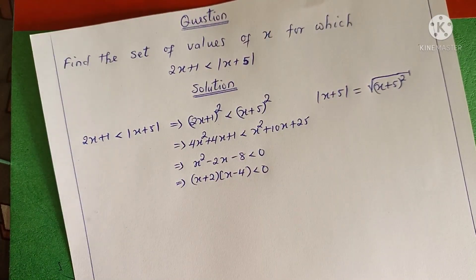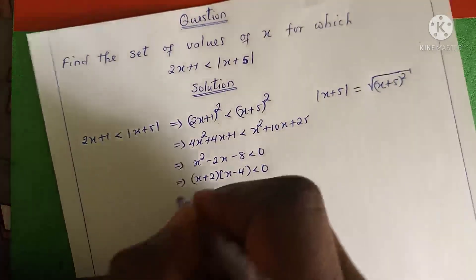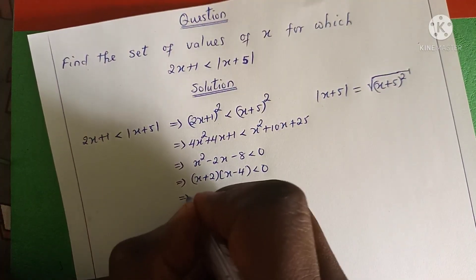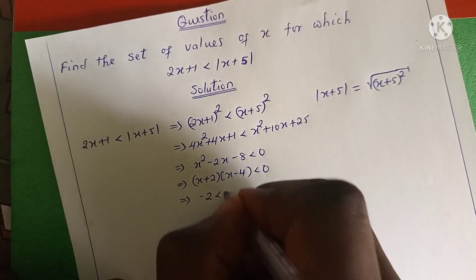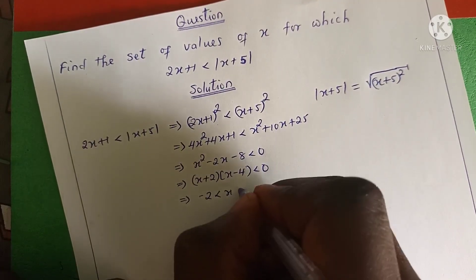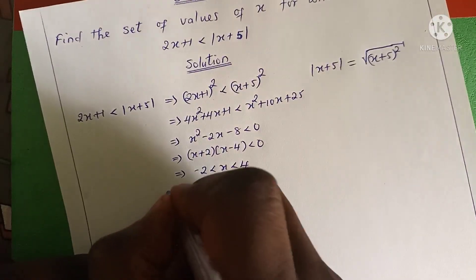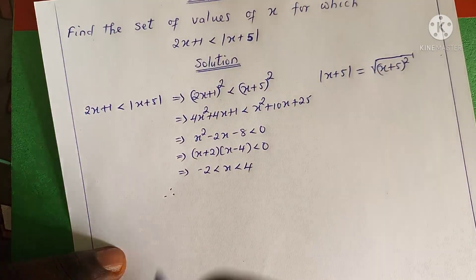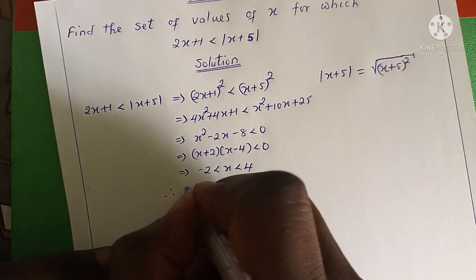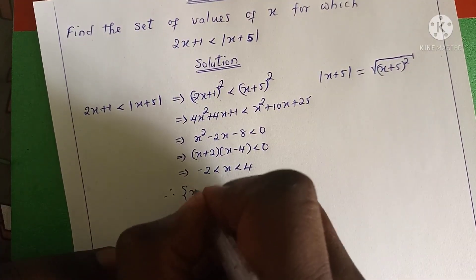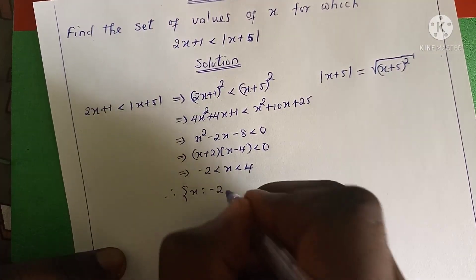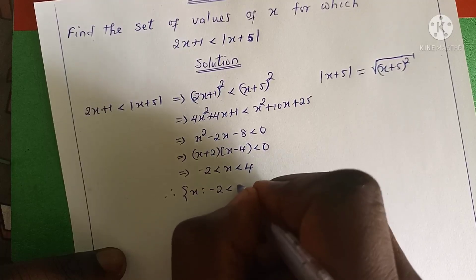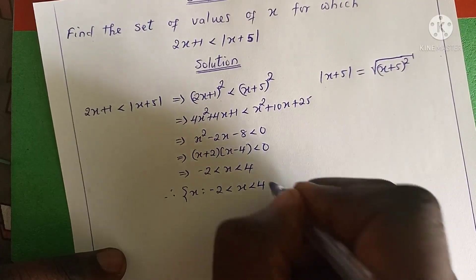This gives two critical values: negative 2 and positive 4, meaning -2 < x < 4. So this is what most students will obtain as their solution set: {x : -2 < x < 4}.